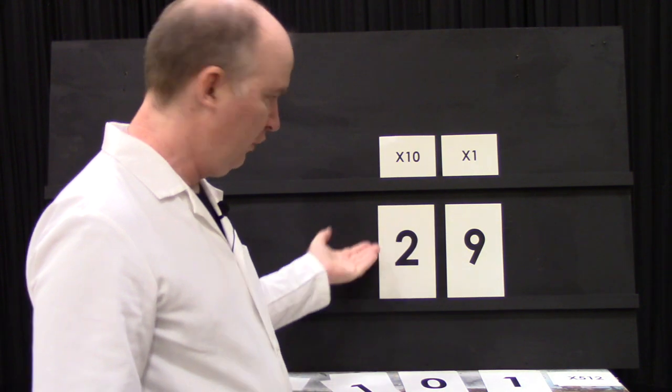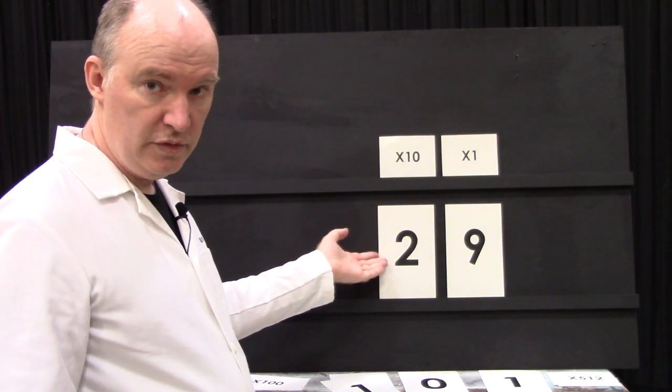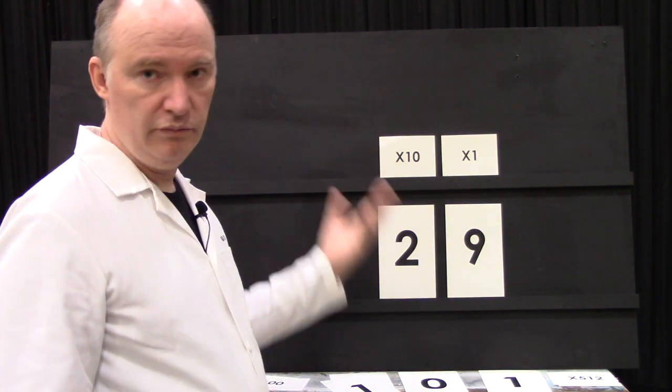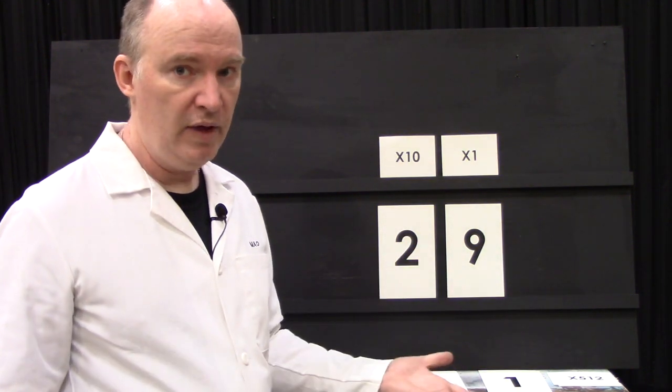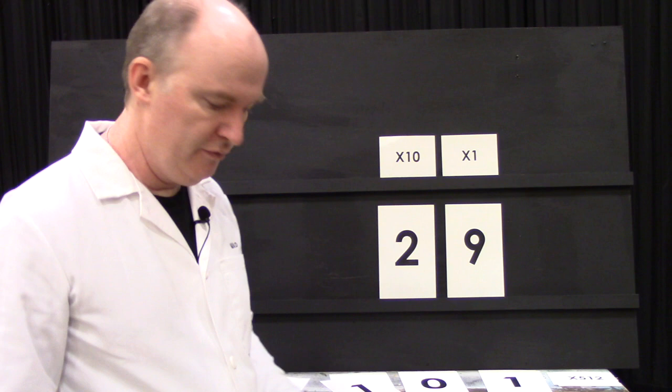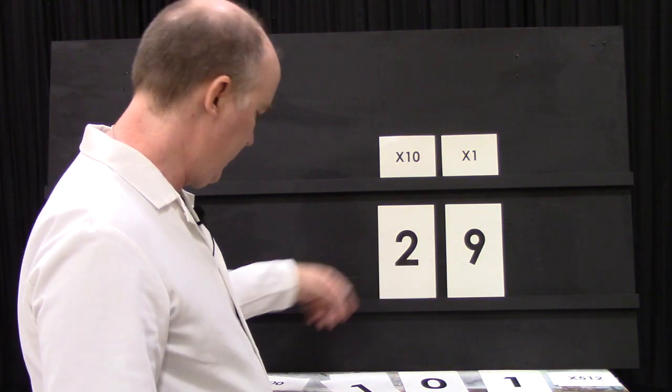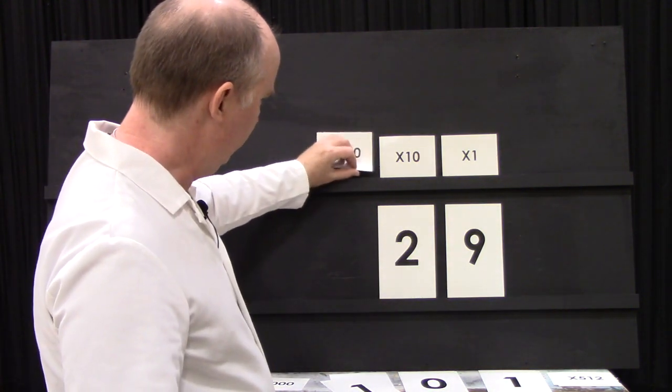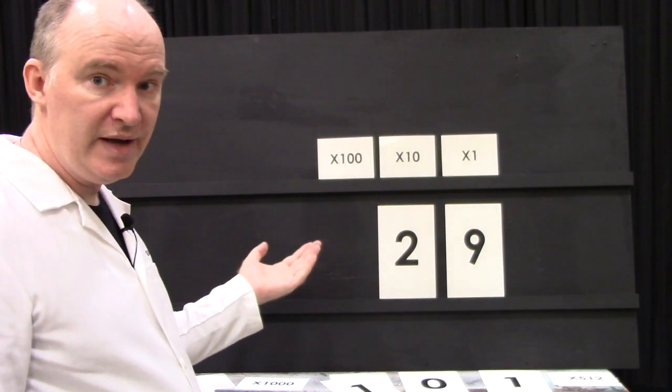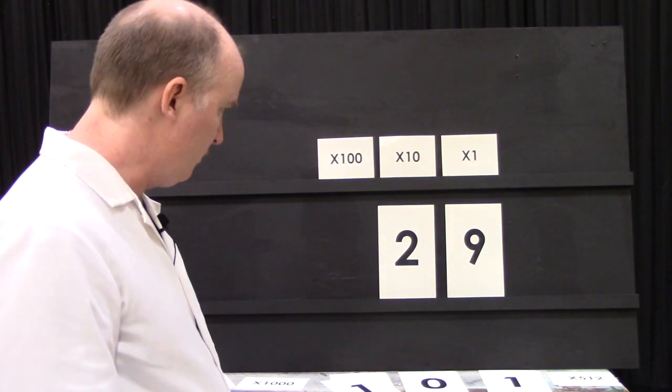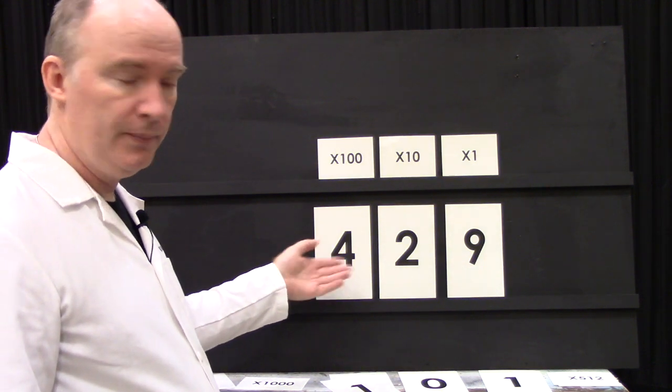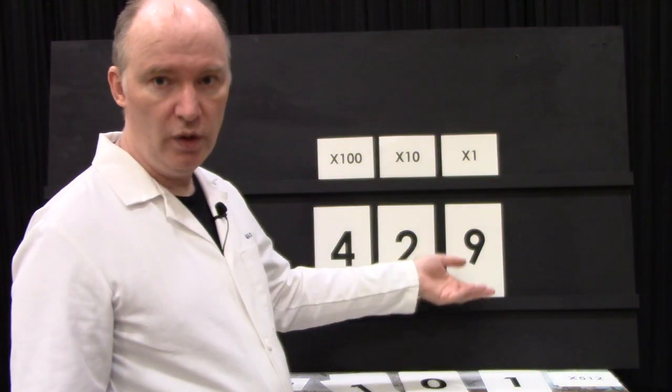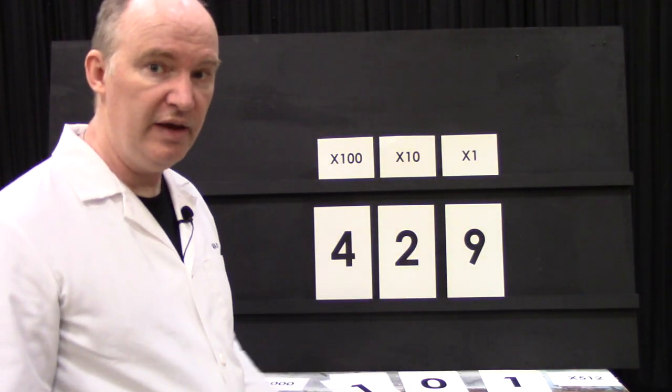Everything, this number times one, is how many single items we have. The next one is the tens place. So for example, if we had a 2 here, this would be 2 times 10, so two groups of 10 plus a group of nine, and that's how many things we have.